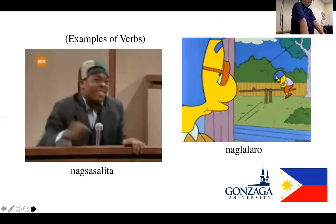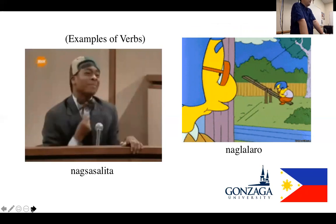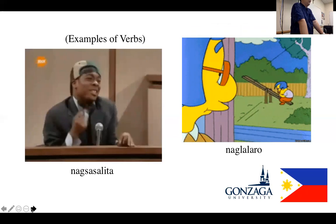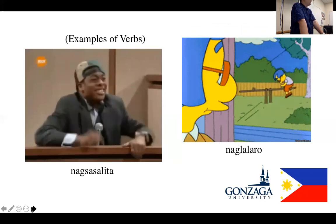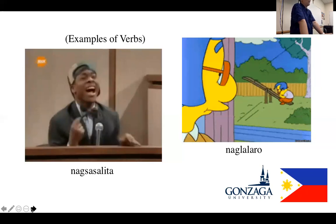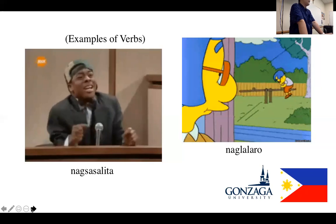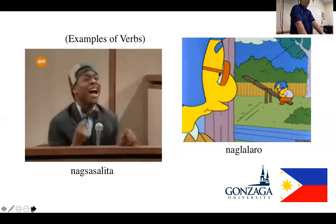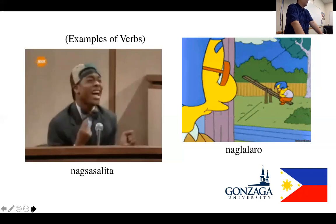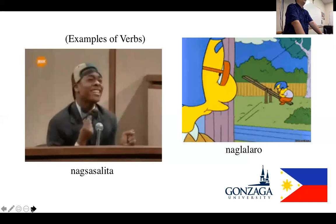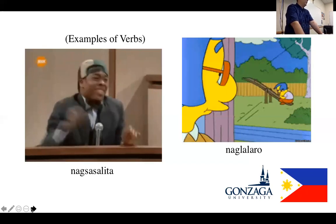Everyone, please say 'nagsasalita.' What's the root word? Salita — which in Tagalog translates to 'word,' or it could also mean 'speak.' This is a classic example of a root that can be both noun and verb. Once affixed — nagsasalita — it becomes a verb meaning 'speaking.' Next: 'naglalaro.' The root word is 'laro,' which means 'game' or 'sport,' or it could also be the verb 'play.' So naglalaro means 'playing.'